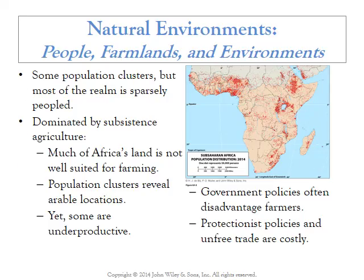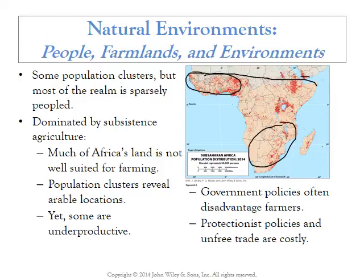In sub-Saharan Africa you have West Africa, South Africa, and the Horn of Africa. Looking at population distribution, red dots indicate population centers — but this is a huge landmass that's relatively sparsely populated. In fact, all those population centers added together still make up only about two-thirds of the population of China. So this huge landmass has a very sparse population overall.